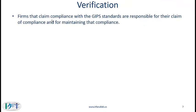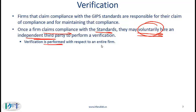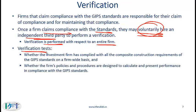Firms that claim compliance with the GIPS standards are responsible for their claim and for maintaining that compliance. A firm may simply declare that it is GIPS compliant. Once a firm claims compliance, it may voluntarily hire an independent third party to perform a verification. Just as GIPS compliance is voluntary, verification is also voluntary. Verification must be performed by an independent third party and applies to the entire firm — not just one division or department.